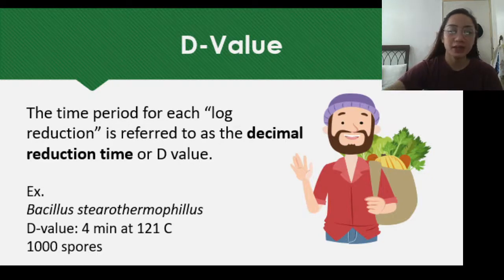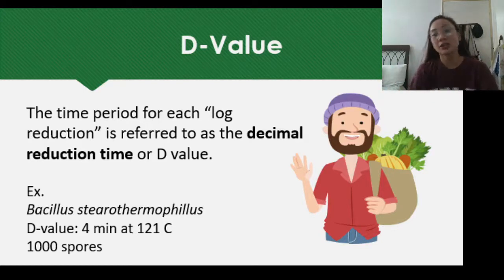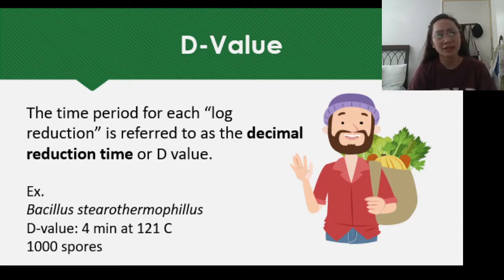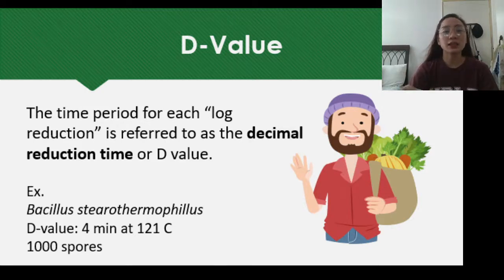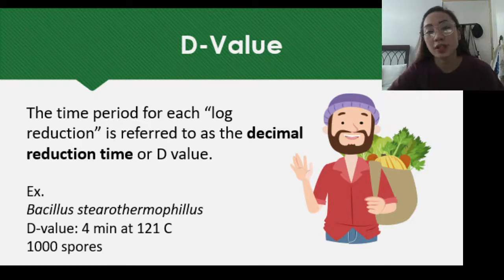In thermal processing, we have different terminologies: D value, Z value, F value, and L value. The D value, short for decimal reduction time, is the time period for each log reduction. For example, Bacillus Stearothermophilus has a D value of 4 minutes at 121 degrees Celsius with 1,000 spores.